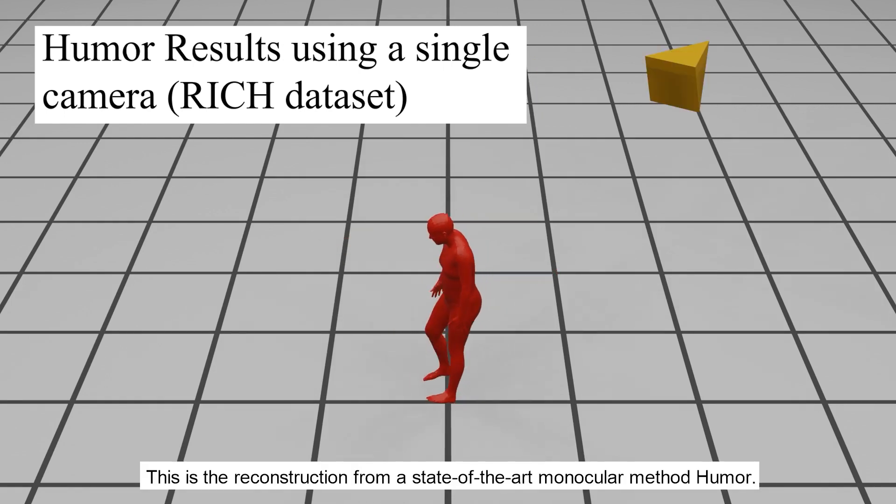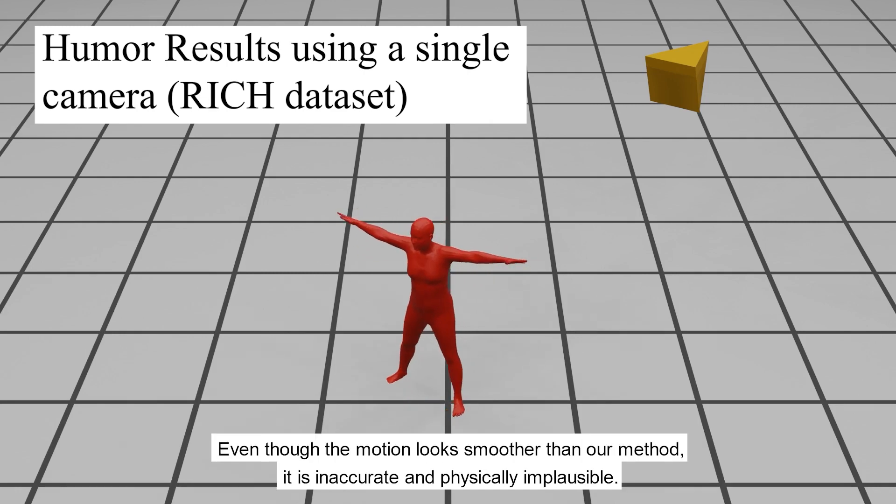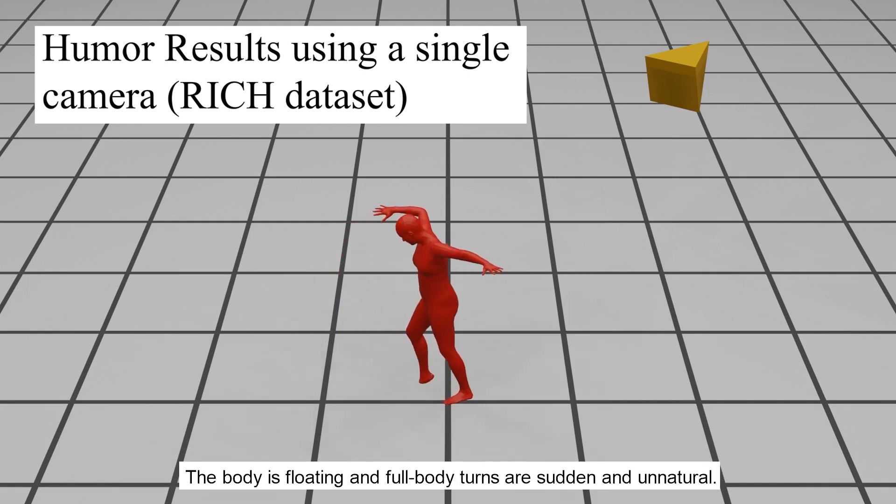This is the reconstruction from a state-of-the-art monocular method, humor. Even though the motion looks smoother than our method, it is inaccurate and physically implausible. The body is floating and full body turns are sudden and unnatural.